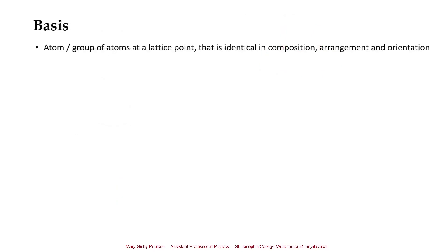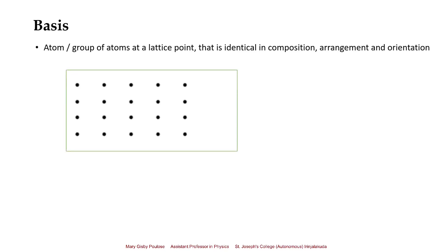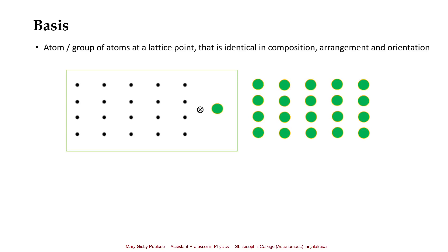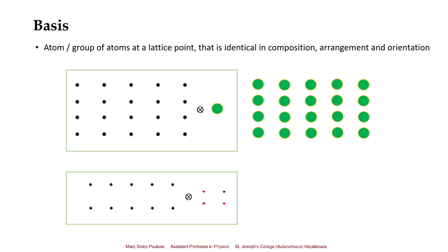The next term to learn is the basis. The basis is an atom or a group of atoms placed at a lattice point, identical in composition, arrangement, and orientation at all lattice points. For example, if we have a lattice and place a single green atom as the basis on all lattice points, we get one structure. If the basis is a group of three red atoms and a single blue atom placed on all lattice points, we get a different distribution.